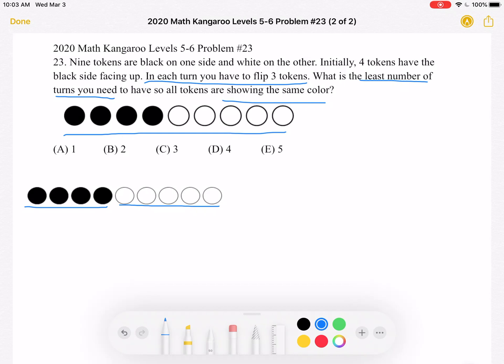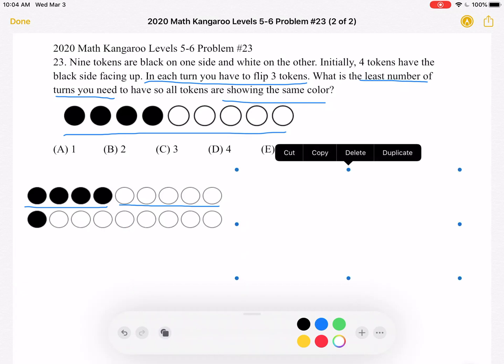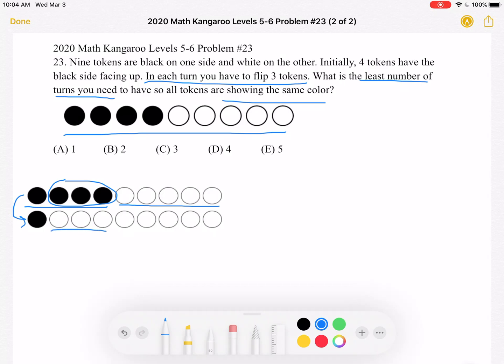So let's start by flipping three black tokens. It doesn't really matter which three we pick, but let's just say we flipped these three. And now we have this setup down here. Those three became white.